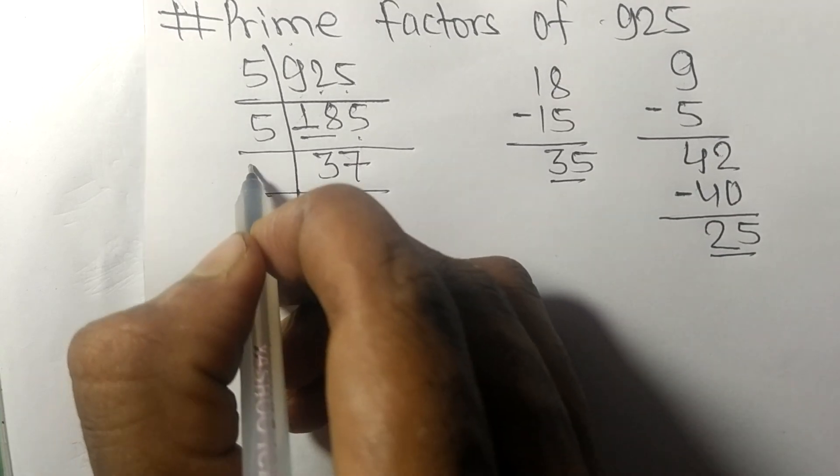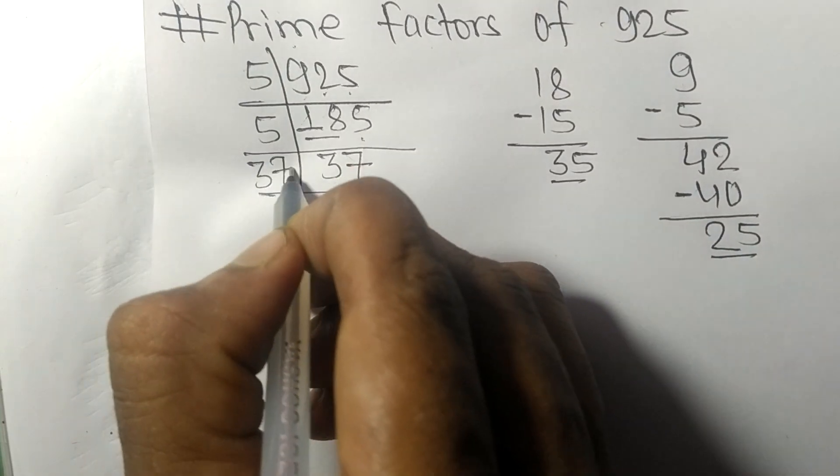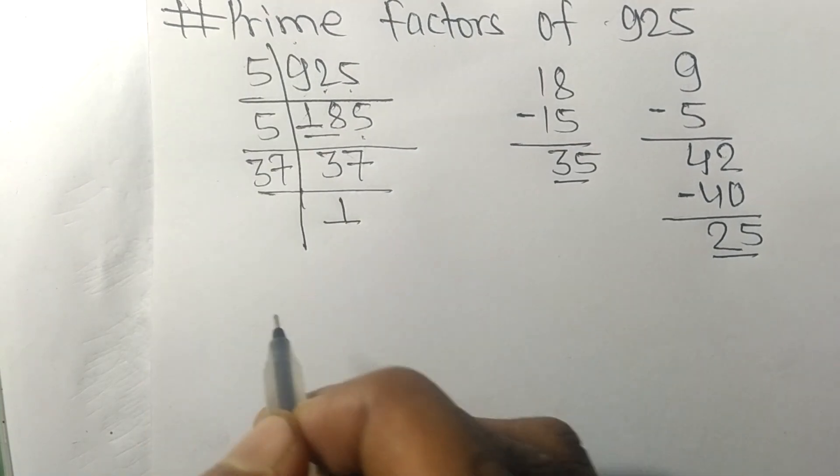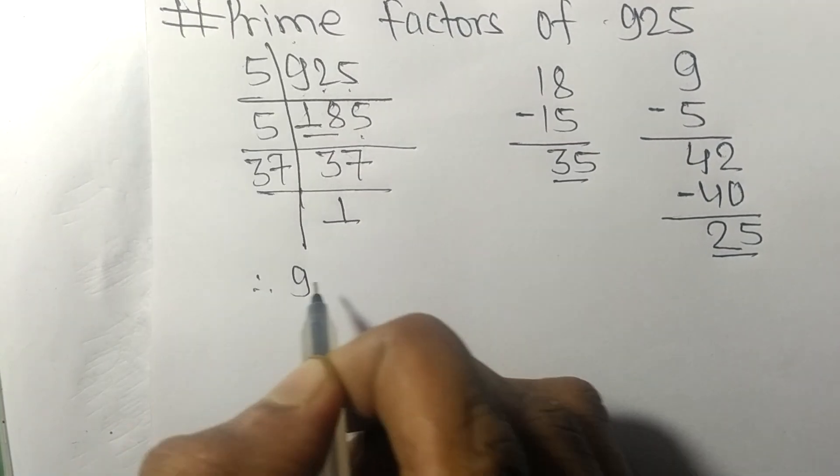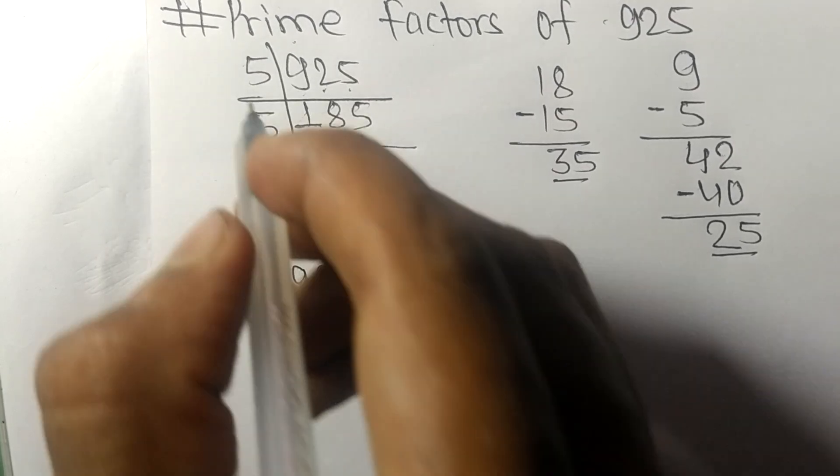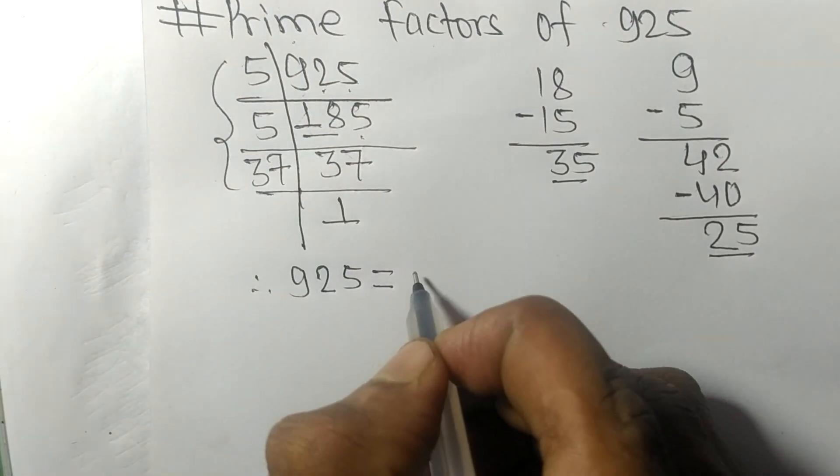It is exactly divisible by 37 only. On dividing we get 1. Therefore, 925 is equal to...